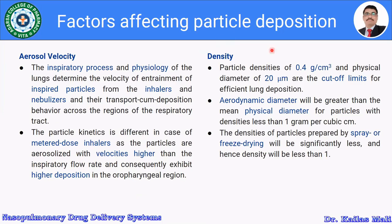Regarding particle density, densities of 0.4 g/cm³ and physical diameter of 20 micrometers are the cutoff limits for efficient lung deposition. Aerodynamic diameter will be greater than the mean physical diameter for particles with a density less than 1 g/cm³. The densities of particles prepared by spray or freeze drying will be significantly less than one, and hence density will generally be less than one. The cutoff limits for lung deposition are particle densities of 0.4 g/cm³ and physical diameter of 20 micrometers.